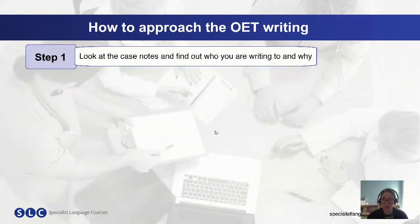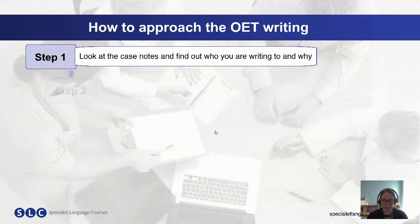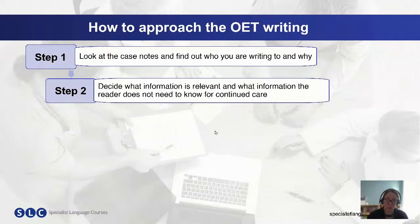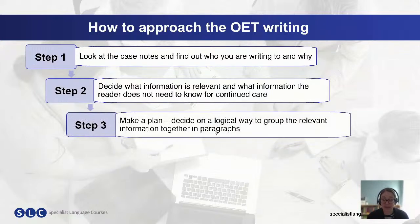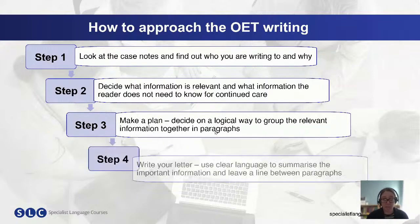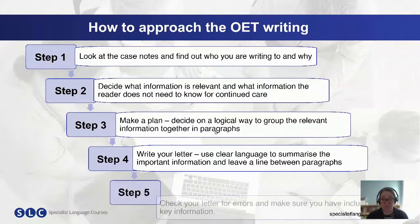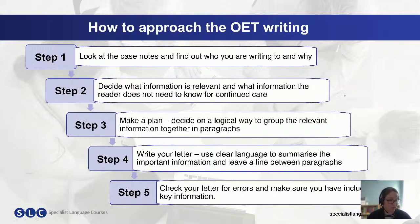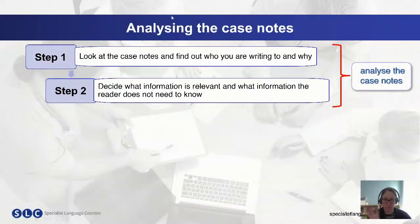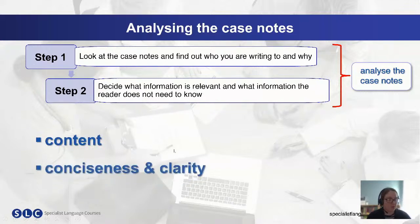Step one: look at the case notes — who are you writing to, and why? Step two: decide what information is relevant and what the reader does not need to know for continued care, thinking about why you're writing. Step three: make a plan — decide on a logical way to group the information together in paragraphs. This is really key. Write your letter using clear language and leave a line between paragraphs. Step four: always try to leave time for checking — check for errors and make sure you've included key information. Steps one and two are what we'll look at today, to achieve a high score for content, conciseness, and clarity.